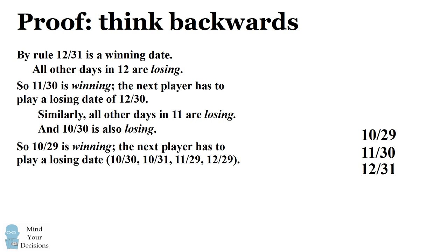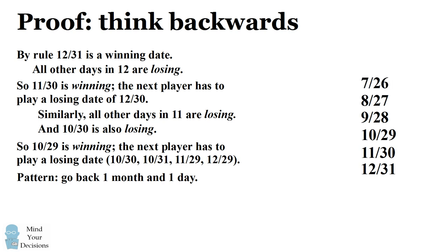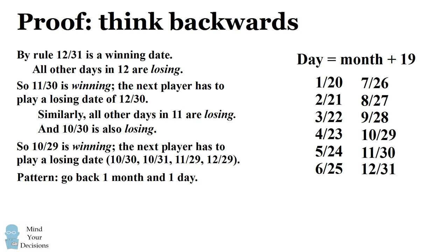We see a pattern here: to get the next winning date, we go one month back and one day back — subtracting one from both the month value and the day value. We keep generating winning dates all the way back to the beginning, and that gives us January 20th as the first winning date. The pattern is: day equals month plus 19, which holds true for December 31, and each step decreases both values by one. It doesn't matter if it's a leap year, because you can always name these dates whether or not there's an extra day in February.